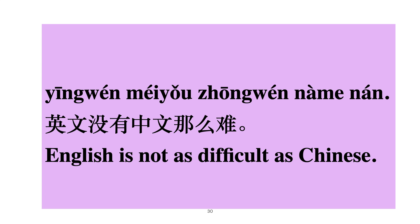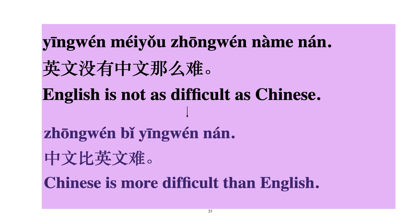One more example: 英文没有中文那么难 — English is not as difficult as Chinese. Another way to say it: 中文比英文难 — Chinese is more difficult than English.